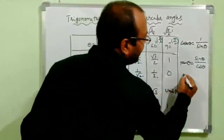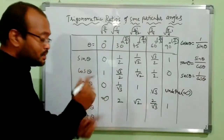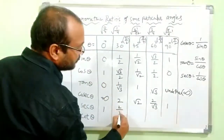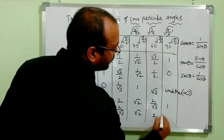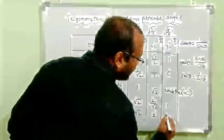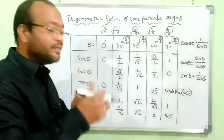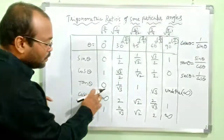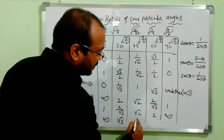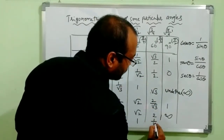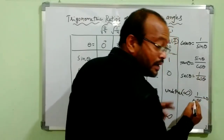Sec θ is the multiplicative inverse of cos, meaning sec θ = 1/cos θ. Using the cos values: sec 0° = 1/1 = 1. Sec 30° = 1/(√3/2) = 2/√3. Sec 45° = 1/(1/√2) = √2. Sec 60° = 1/(1/2) = 2. Sec 90° = 1/0 = undefined (or infinity). For cot θ, which is the multiplicative inverse of tan: cot 0° = 1/0 = infinity. Cot 30° = √3. Cot 45° = 1. Cot 60° = 1/√3. Cot 90° = 1/infinity = 0.